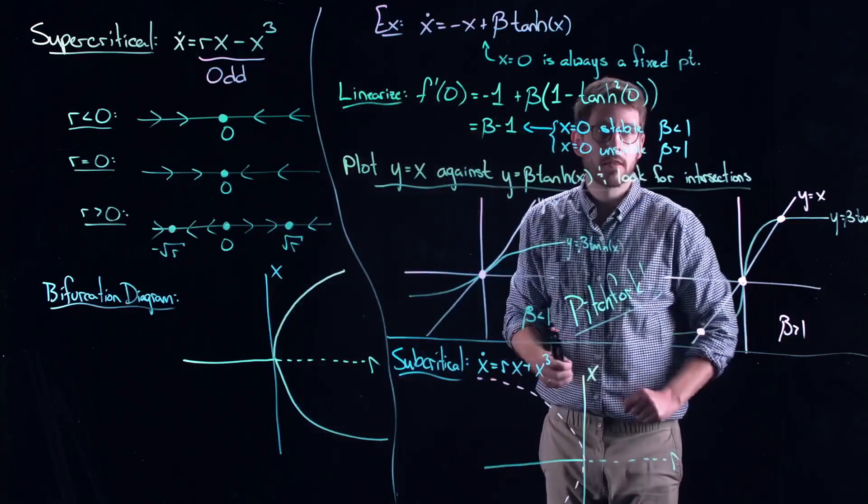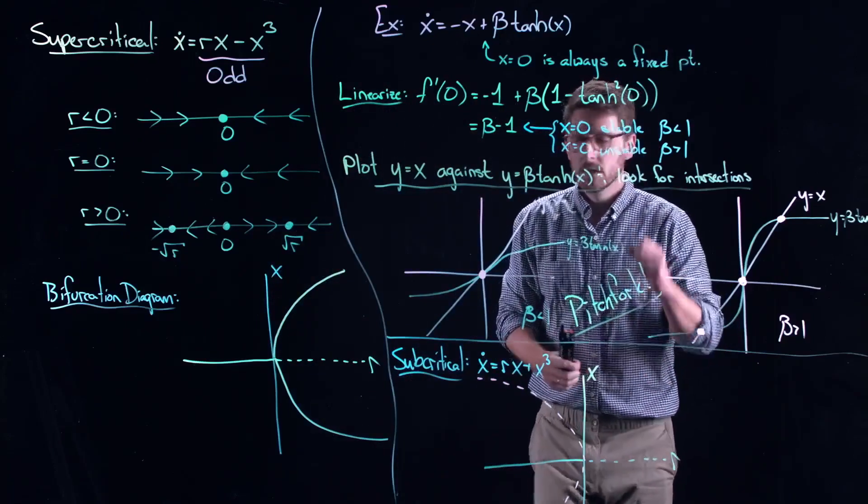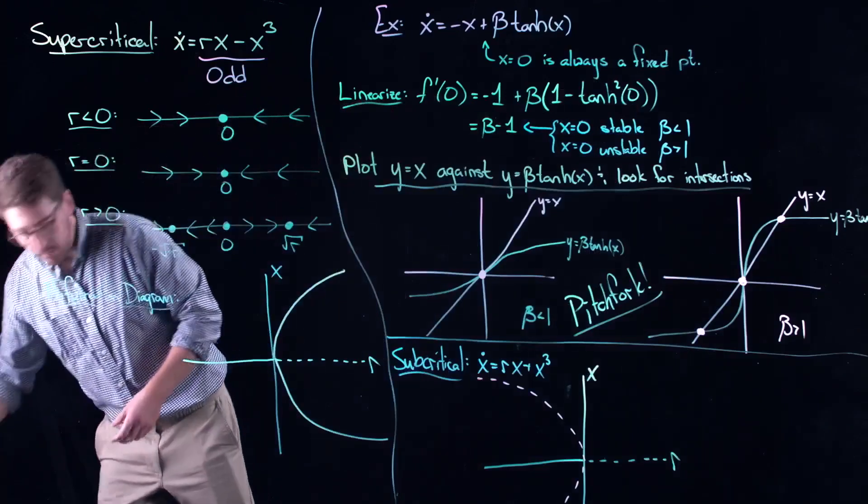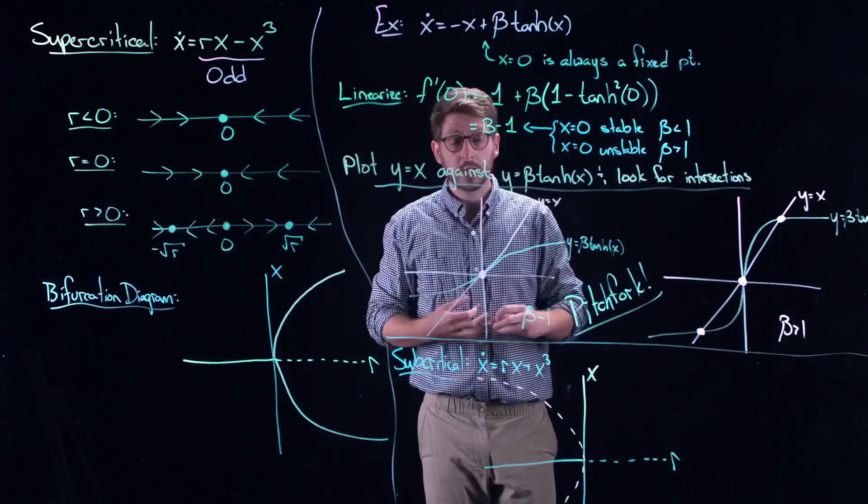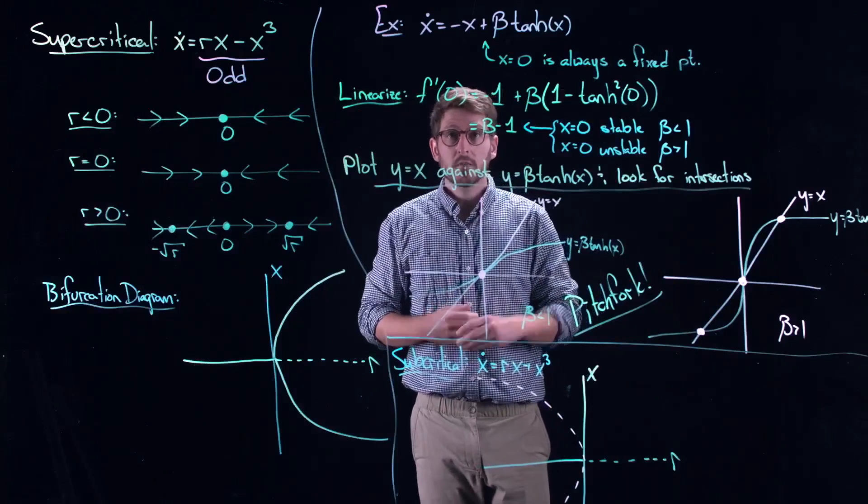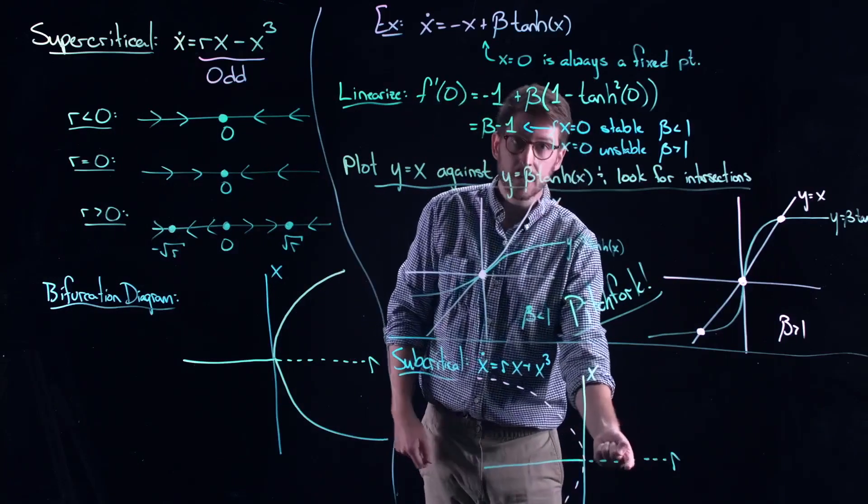Because now, there's nothing stable anymore. Subcritical pitchfork bifurcations are much more difficult to observe in nature or in natural systems. For the very simple reason that here, there's nothing stable. There's nothing that you're going to observe because there's nothing to converge into.